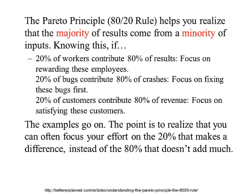Let's look at some examples of where this is applied in the real world. 20% of workers contribute 80% of the results. If that happens, you want to focus on rewarding these employees. 20% of the bugs contribute 80% of the crashes. You want to fix these bugs first. If 20% of customers contribute 80% of the revenue, you want to focus on satisfying these customers.